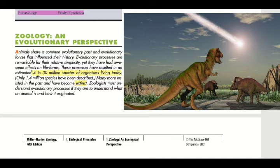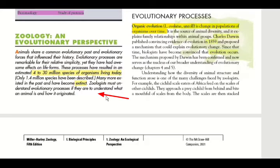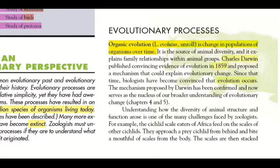Zoologists must understand the evolutionary process to understand what an animal is and how it originated. To understand an animal better, we need to know how it evolved. When discussing the evolutionary process, there is a term called organic evolution. The Latin word 'evolutus' means 'unroll,' and organic evolution is defined as change in populations of organisms over time.